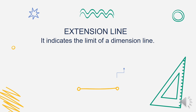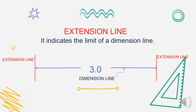Next is the extension line. The extension line indicates the limit of a dimension line. The dimension line — shown in blue — has arrowheads and a numerical value showing the measurement. The extension line, shown in red, limits the dimension line. They are always paired together: the dimension line gives the numerical value with arrowheads, and the extension line delimits where the arrowheads end.